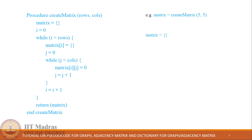We have declared the variable 'matrix' and initialized it to an empty dictionary. Next, variable i is set to 0. Now we will start the outer while loop, where we are checking whether i is less than the number of rows. As the value of i is initialized to 0 and the value of the rows variable is 5, the condition is true. We will start the outer iteration. Inside, we are setting matrix[i] equal to an empty dictionary.